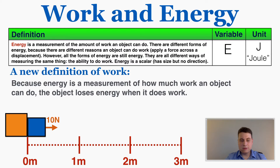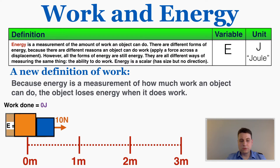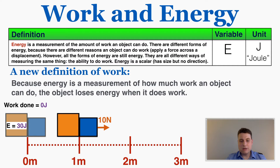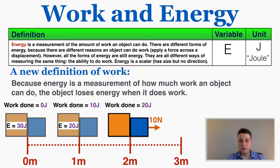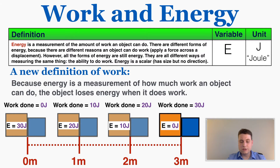Imagine the orange box is applying 10 newtons on the blue box and has 30 joules of energy. Before anything moves, the total work done is zero. If the orange box moves the blue box forward 1 meter, it's done 10 joules of work — so if it could do 30 joules before, it can now only do 20. Move it another meter: total work done is 20 joules, so the orange box only has 10 left. At the very end, total work done is 30 joules and there's no energy left in the orange box — it's done all the work it can do.